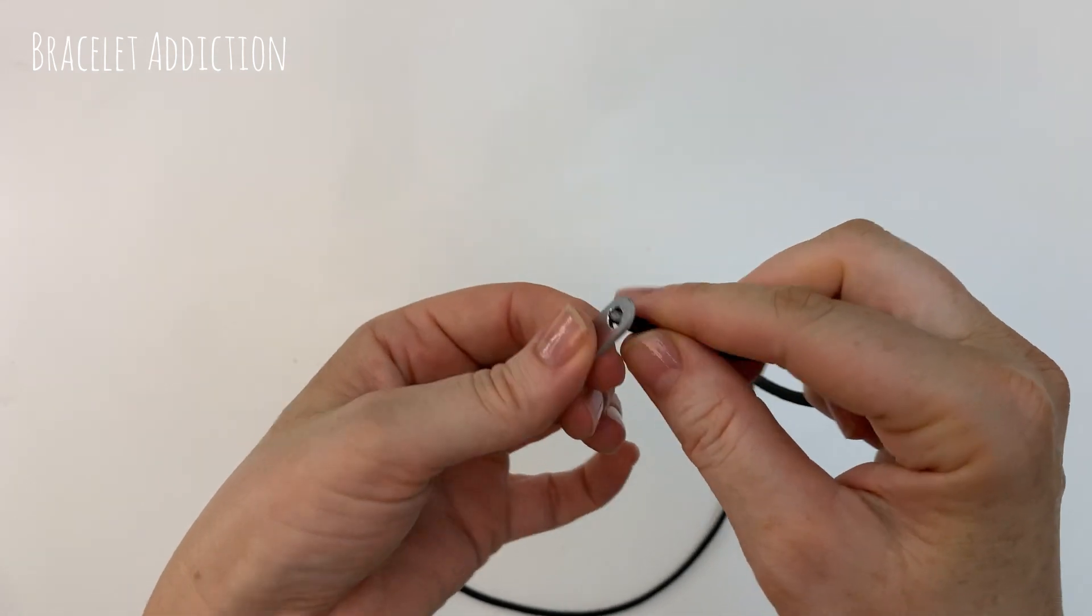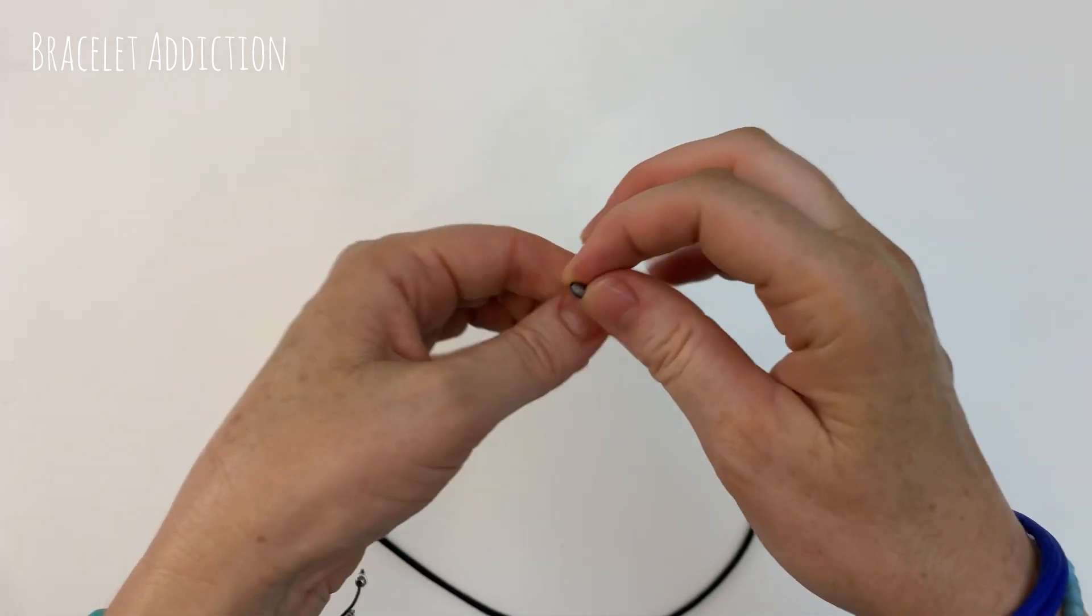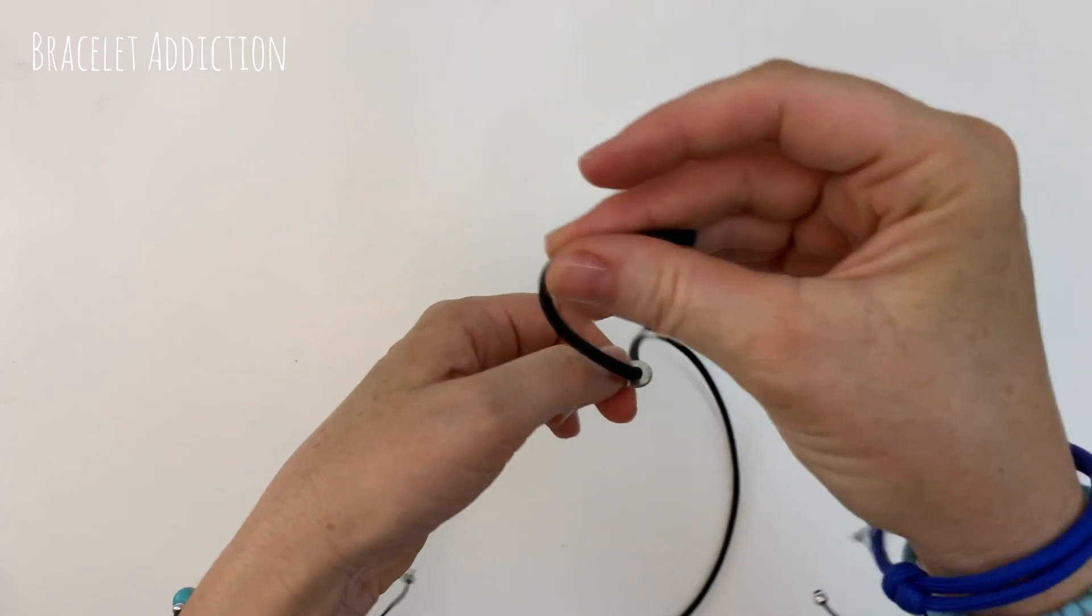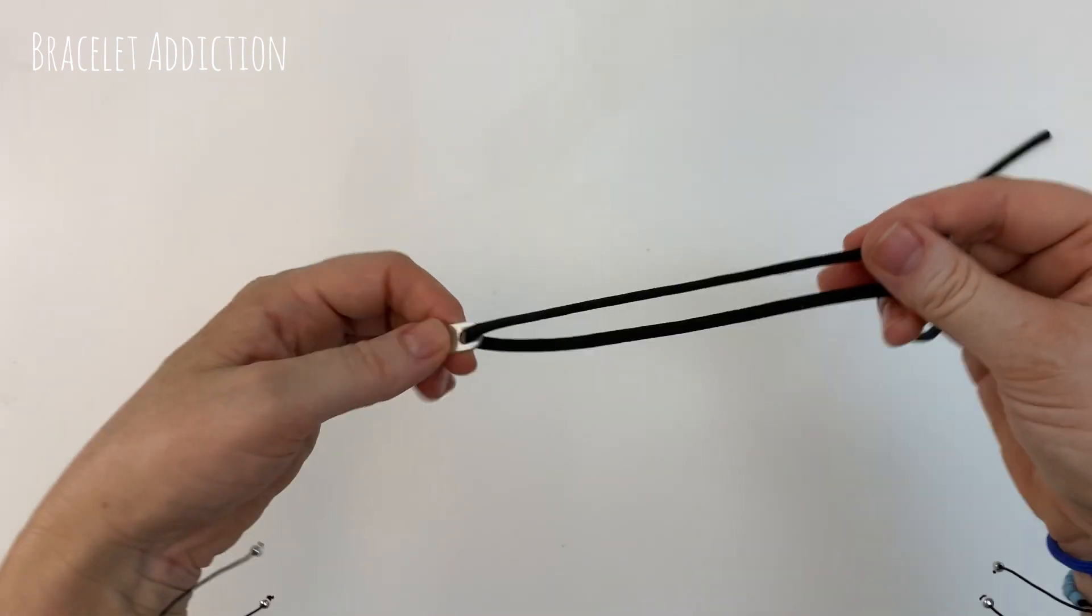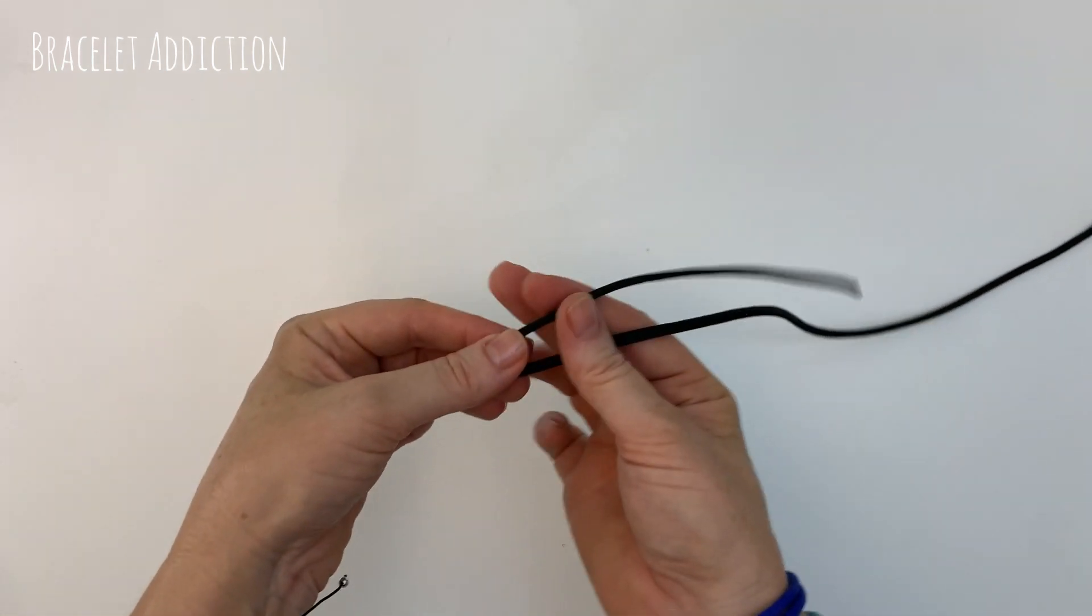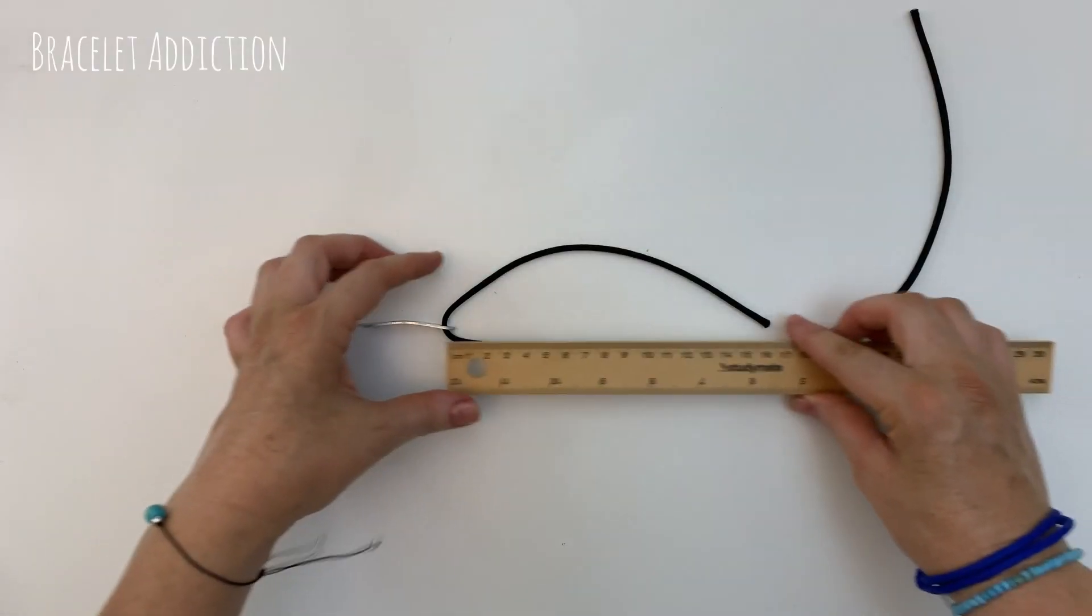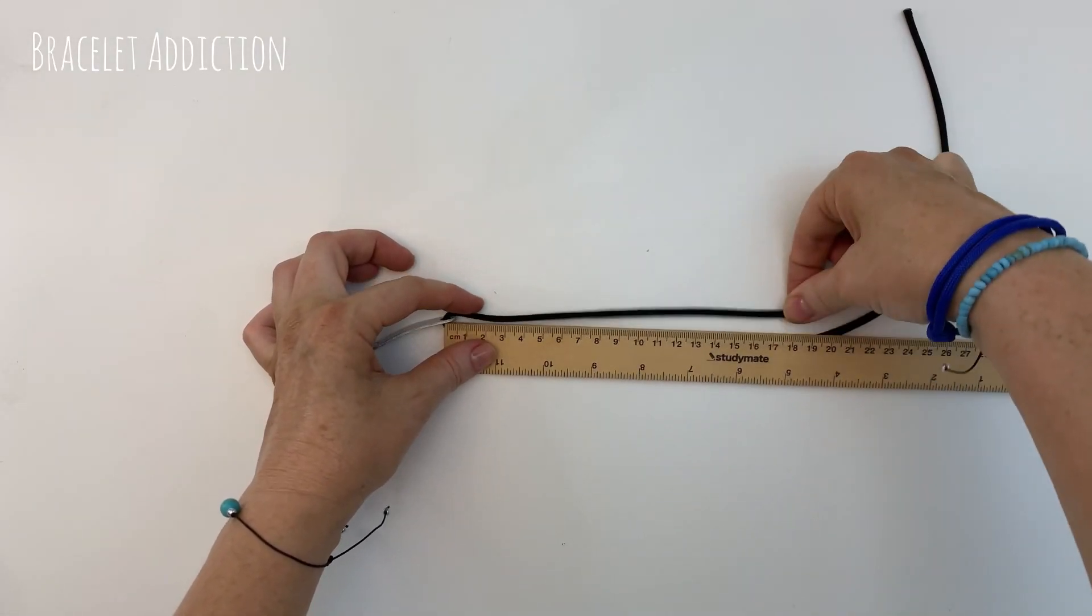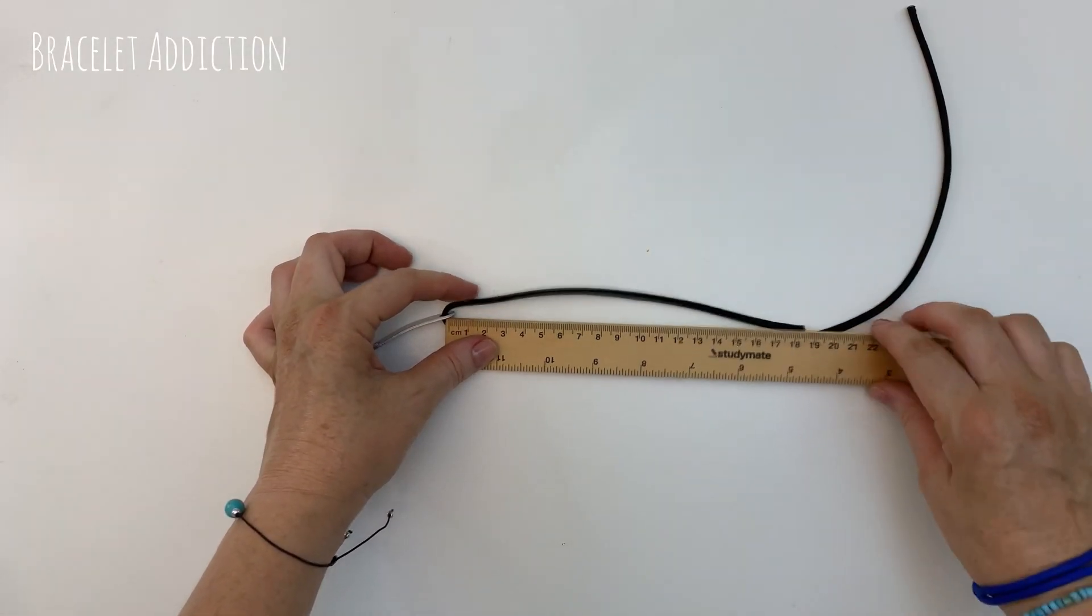Now we start by threading the end of our cord through one of the holes on the bar. Bringing the cord around so that we've got a short end and a long end. You do need a little bit of length on the shorter cord. Mine is about 18 centimeters long.